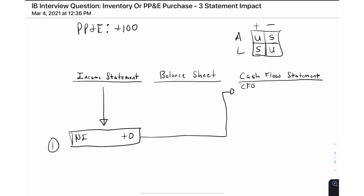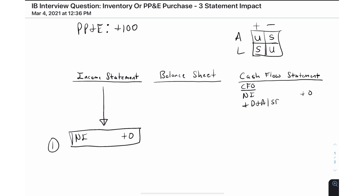On the cash flow statement, starting with CFO — cash flows from operations — net income impact is zero. We just purchased this factory so we don't have any depreciation expense yet, meaning nothing to add back for non-cash charges; D&A and SBC are zero. Adjustments for changes in net working capital — things like inventory and accounts receivable — are not relevant here, so that's zero. CFO net impact is zero.